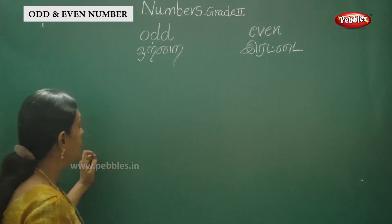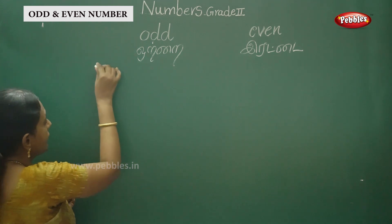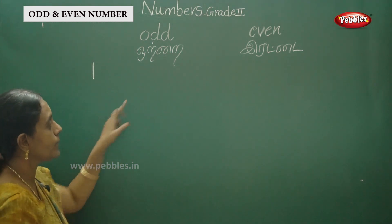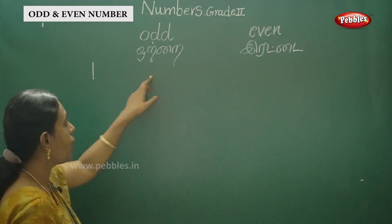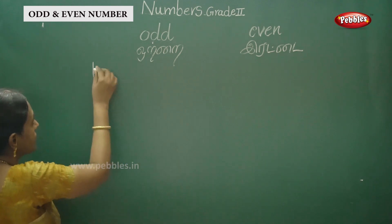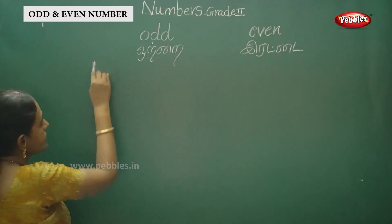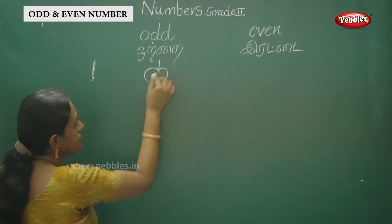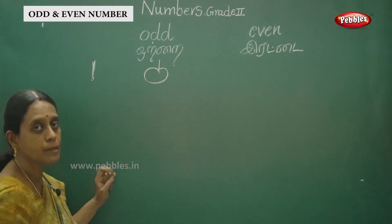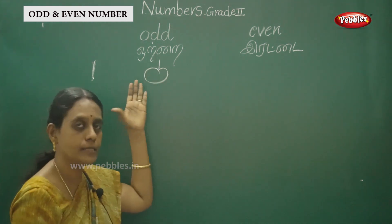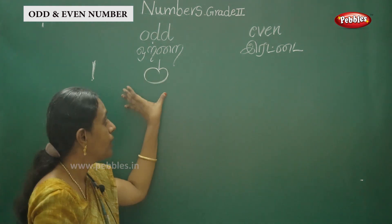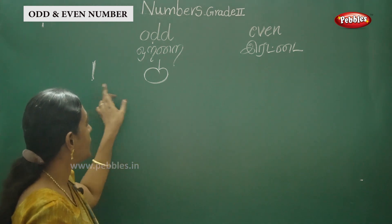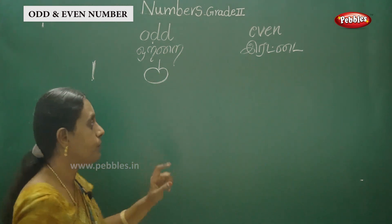Numbers: at the ones place, if it ends in one — one is an odd number. One is an odd number. Drawing: one apple, one flower, one fruit — anything with one element. One is odd. One group.